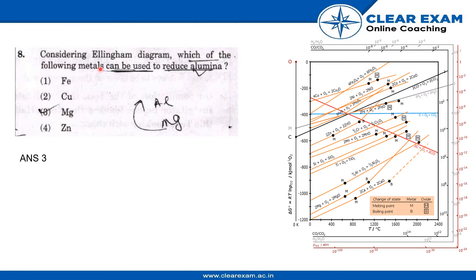So the question is, considering the Ellingham diagram, which element of the following metals can be used to reduce alumina? The options are Fe, Co, Magnesium, and Zinc.